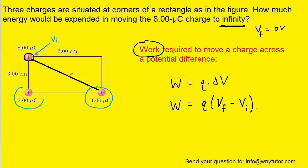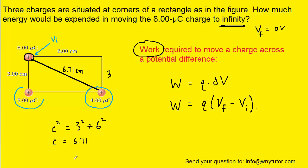Before we calculate the two electric potentials, it's worth finding this distance first because we're going to need it. We know that this length here is 6 centimeters and this length here is 3 centimeters, so we can use the Pythagorean theorem to get the length of this side. When you solve for C, you should end up with approximately 6.71 centimeters. If you have any questions about how we used the Pythagorean theorem there, please let me know in the comments.